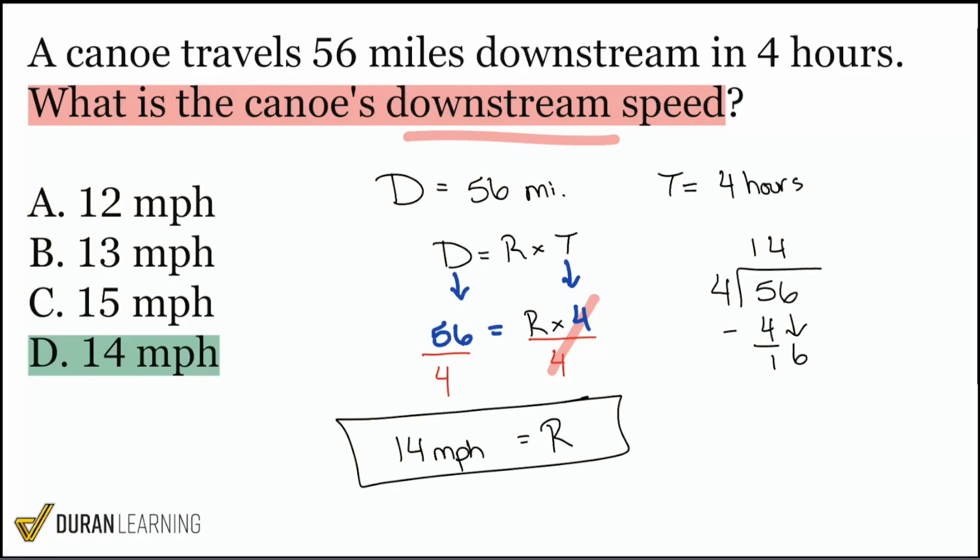And the main lesson for this one is that if you're looking for the rate or the time, either one, we're going to be dividing instead of multiplying. Again, to find the rate or the time we divide, to find that distance, we will multiply. But let's go ahead and see how we do in the next one.